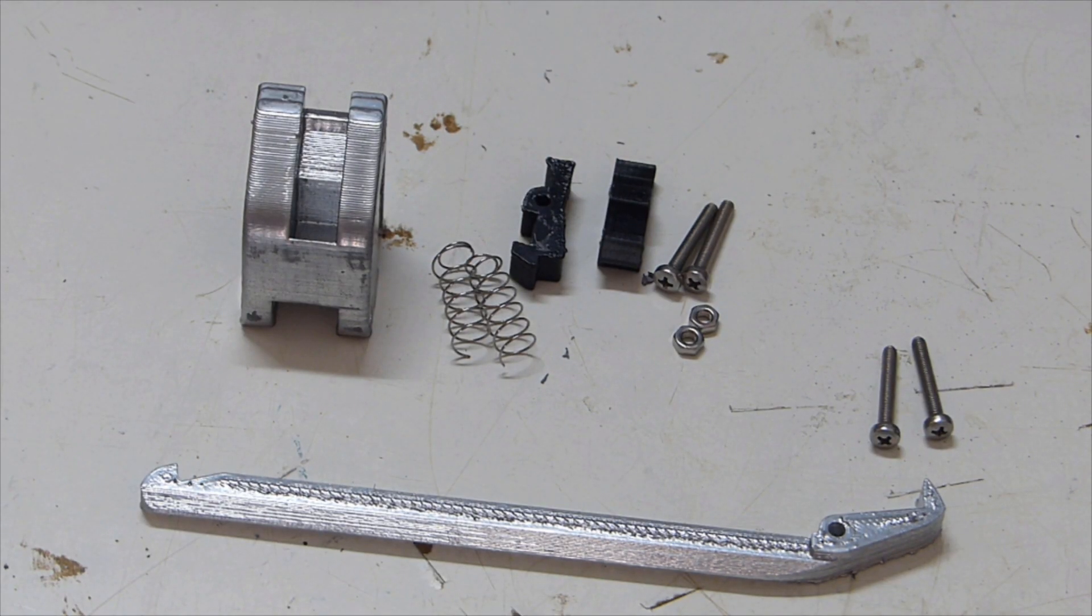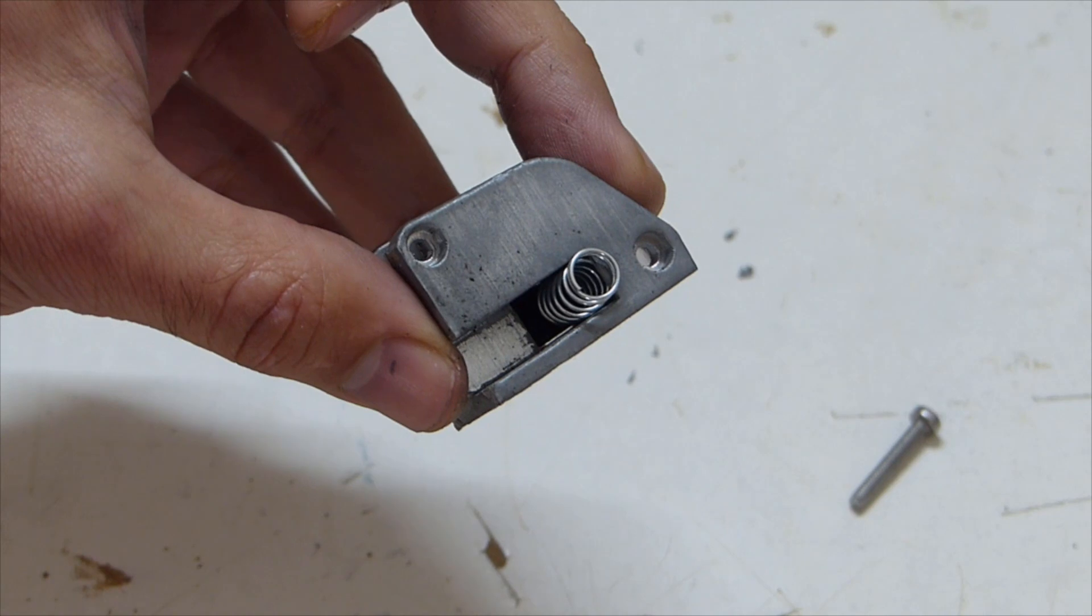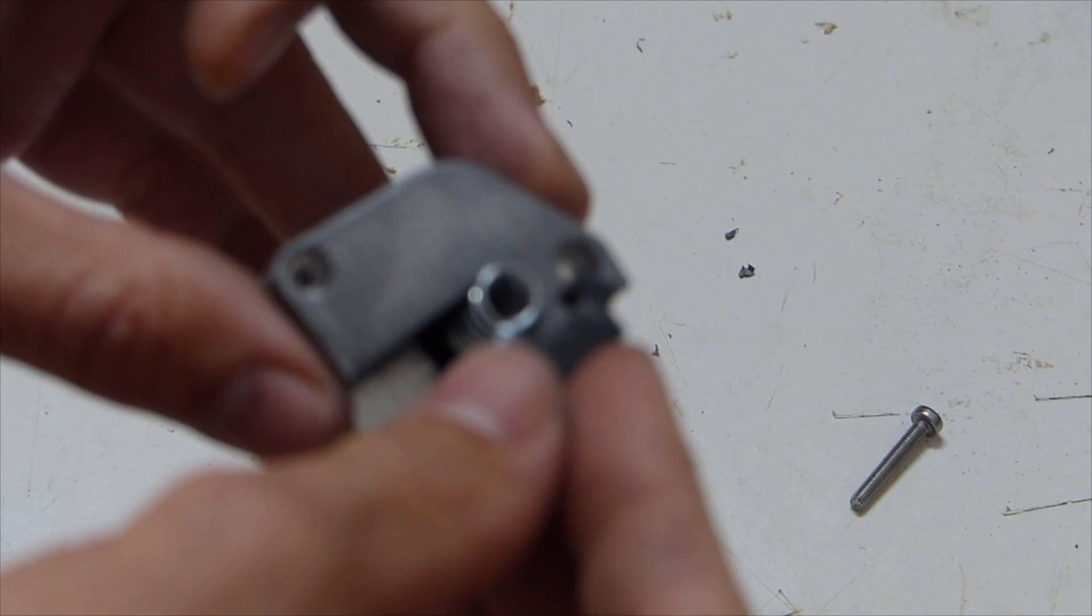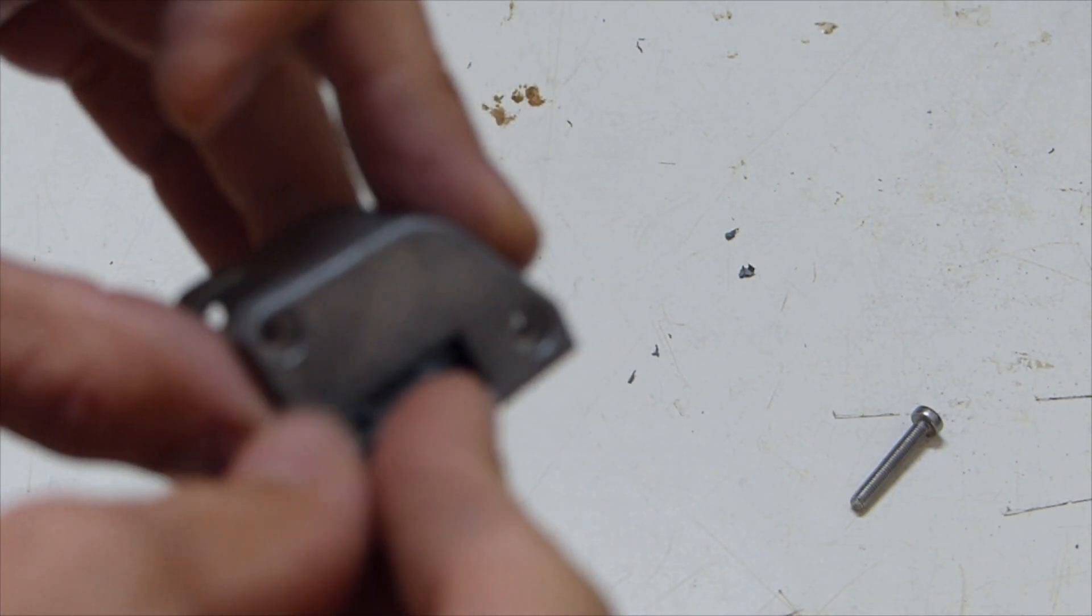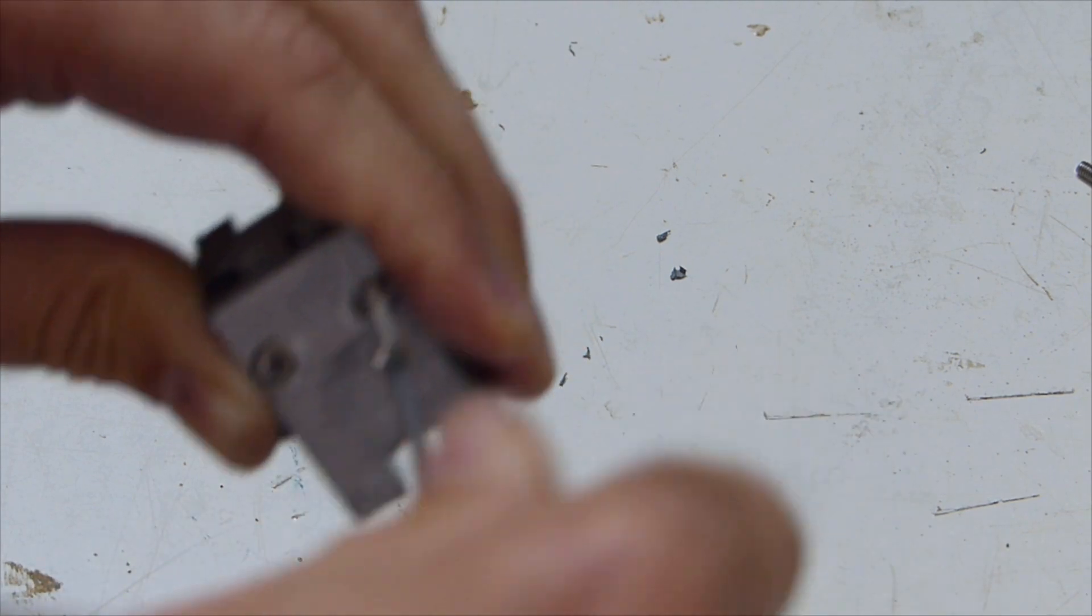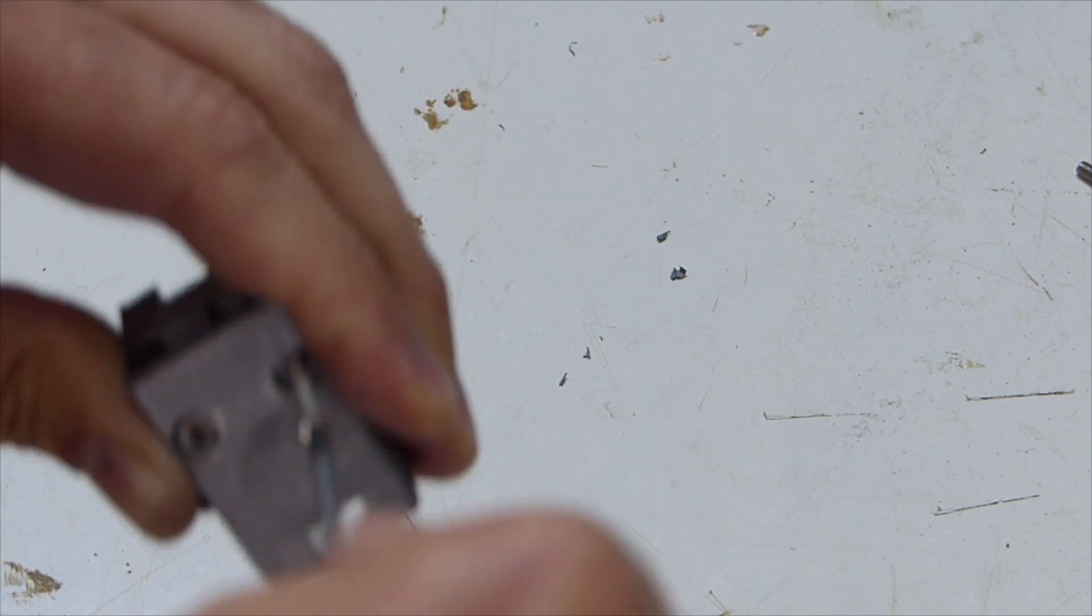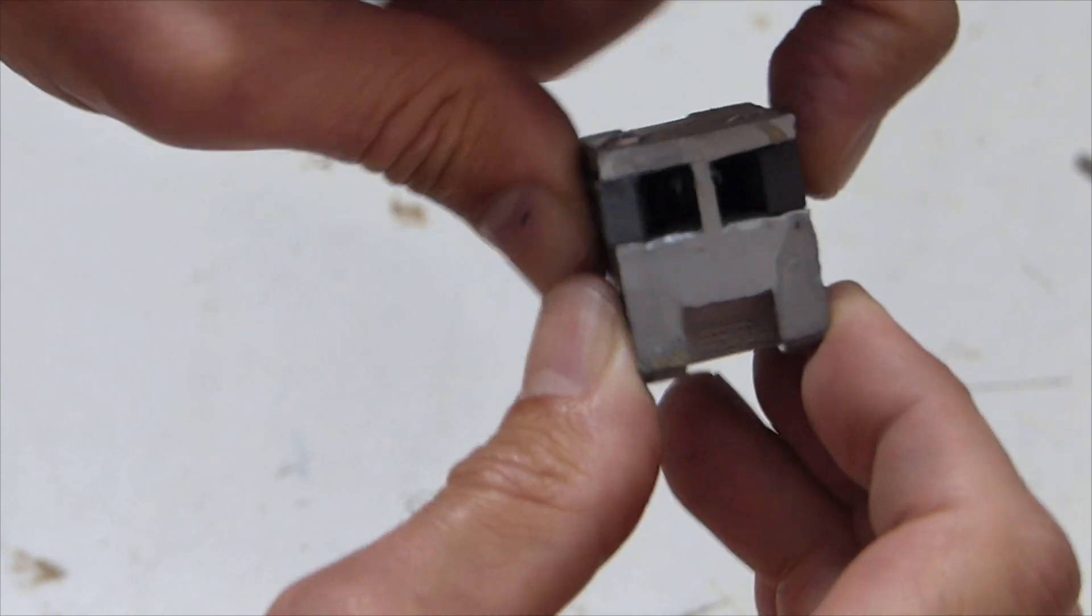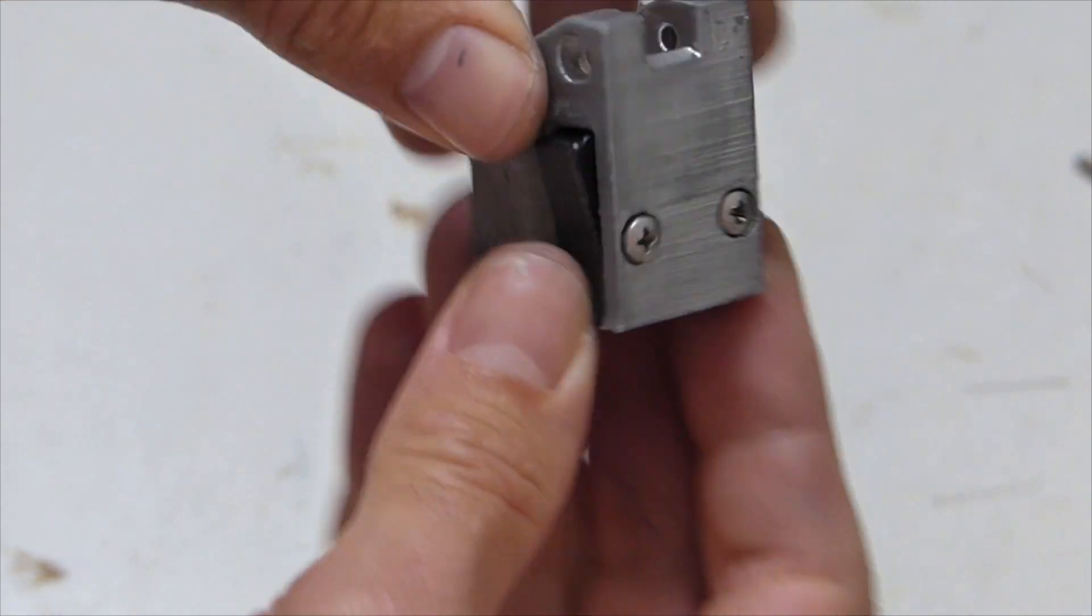The arrow holder mechanism assembly is next. A spring is placed in the middle of the main body with one of the black clips at the bottom secured with an M3 16mm bolt. The other black clip is pressed against the spring and secured in place with the other M3 16mm bolt and the result is two black clips that can open and close when pressed as shown.